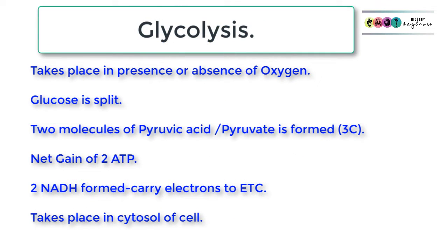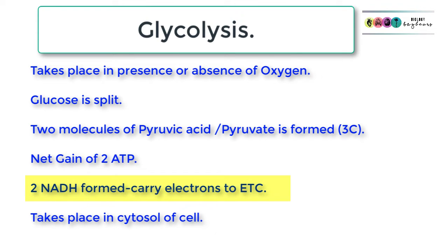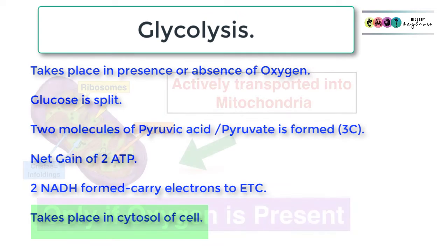To review glycolysis: it can take place in the presence or absence of oxygen, so oxygen does not play a role. Glucose, a six-carbon molecule, is split into two molecules of pyruvic acid or pyruvate, each with three carbons. There is a net gain of only two ATP, and two NADH molecules are formed as electrons are trapped by NAD+. This all takes place in the cytosol of the cell.